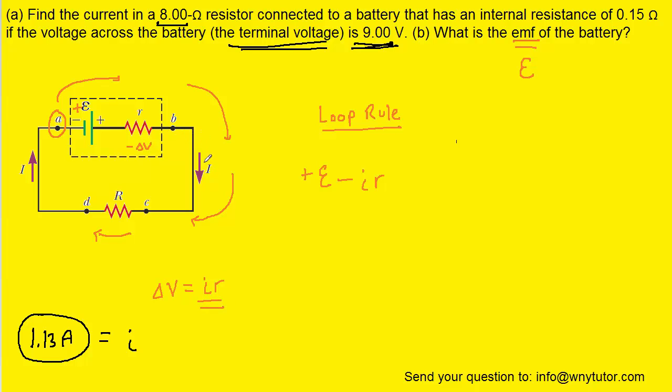And then we'll have the current times that resistance, as we indicated with this equation here. Now continue around the loop until we encounter this resistor. Again, we're moving in the direction of the current. So there'll be a negative potential change. And this potential change is going to be the current multiplied by uppercase R. So we can fill that in.